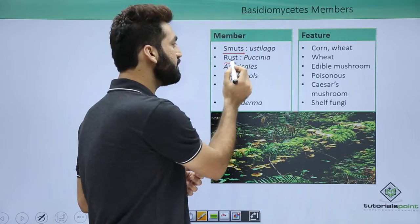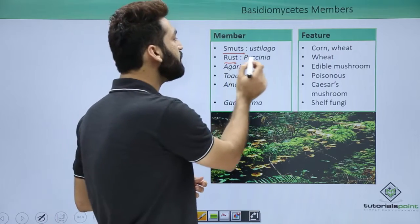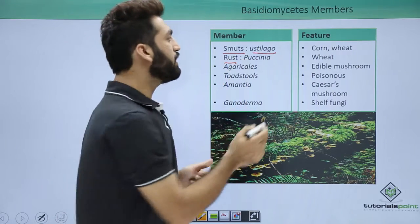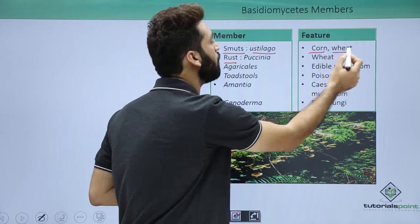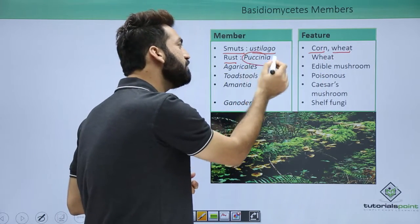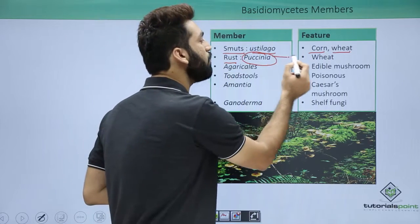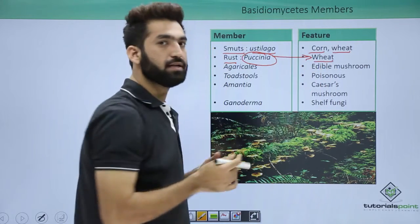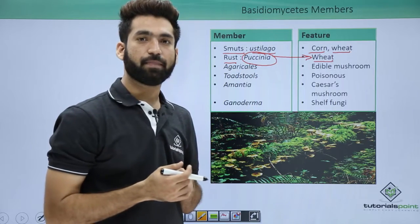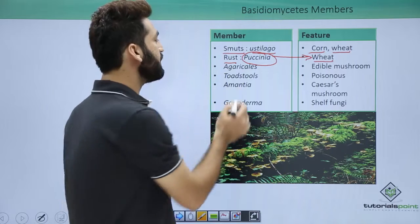Important members include smut and rust, which lack dolipore septa. In smut, Ustilago causes diseases in corn and wheat. Puccinia, an important member of the rust group of Basidiomycetes, causes disease on wheat. The life cycle of Puccinia will be covered in the next session.